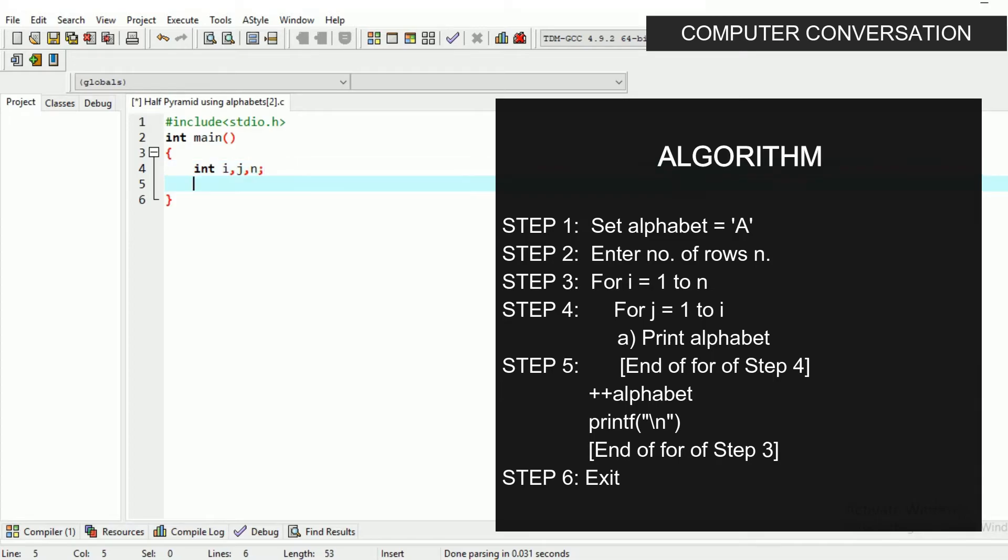After that during declaration of variables, we should initialize the character variable alphabet with A. Then take the input as n by showing a message to enter a value to the user, which will be the number of rows and column.